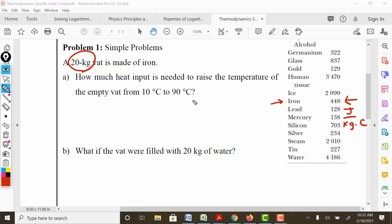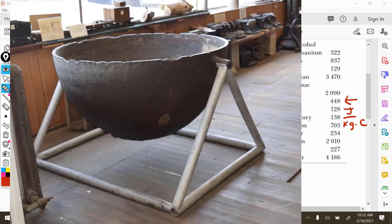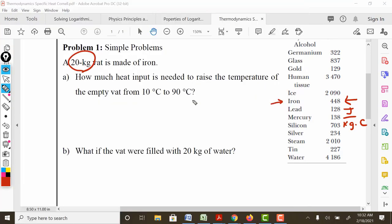Remember, the idea behind specific heat is specific heat is the ability to hold heat. So in this case, we have a vat made of iron that's going to hold heat. And how much heat is required to raise it from 10 degrees Celsius to 90 degrees Celsius? So looking at our formula for this, Q is equal to m, the mass, times the specific heat times the change in the temperature.